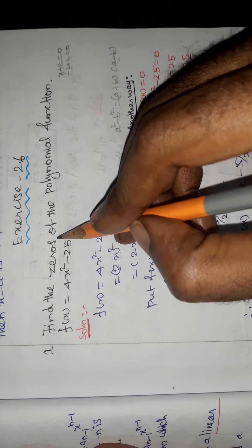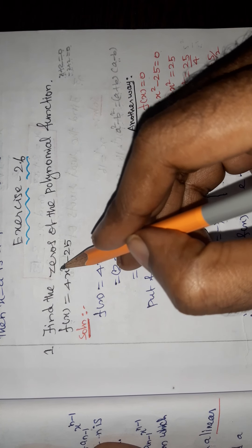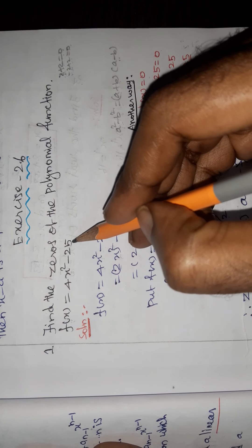Exercise 2.6, Question No. 1. Find the zeros of the polynomial function f(x) = 4x² - 25.